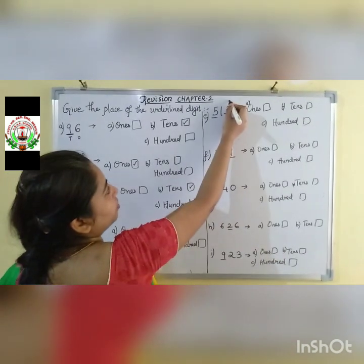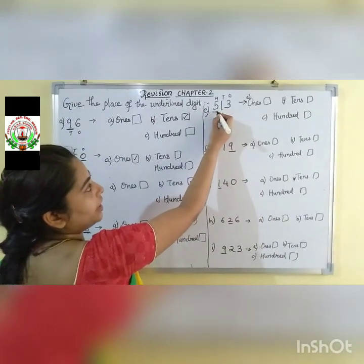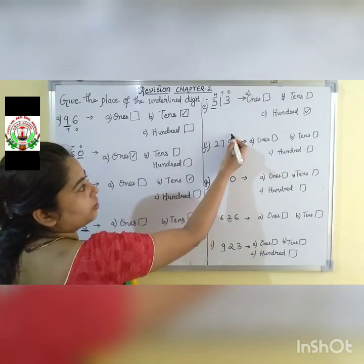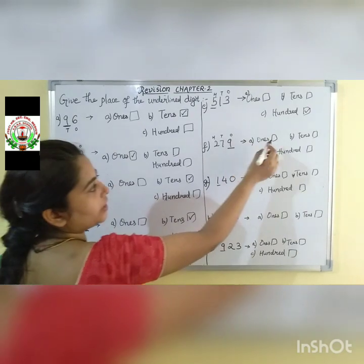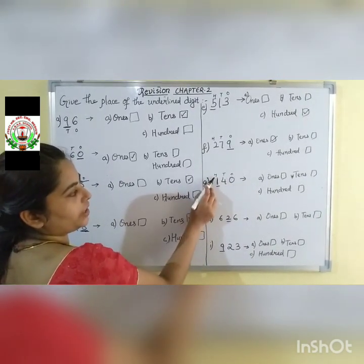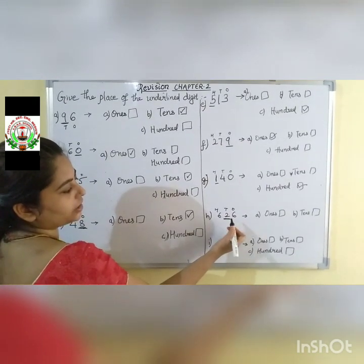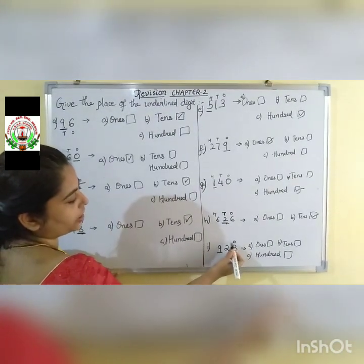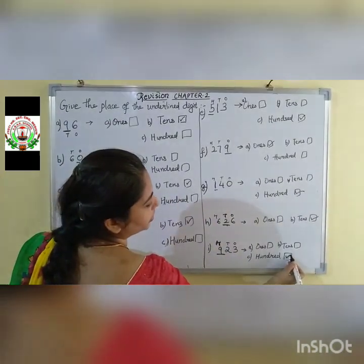Now 3-digit numbers: 1s place, 10s place, and 100s place. The underlined digit is 5 — 5 comes under the 100s place, so tick mark option 100. Next, 729: 1s, 10s, 100. The digit 9 comes under the 1s column, so the answer is 1s. Then 140: 1 comes under the 100s place, so the answer is 100. Then 626: the underlined digit is 2, which comes under the 10s column, so the place is 10s. Then 923: the underlined digit is 9, which comes under the 100s place — tick mark 100.